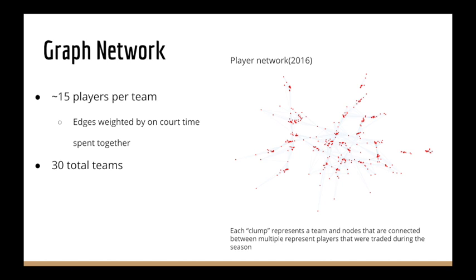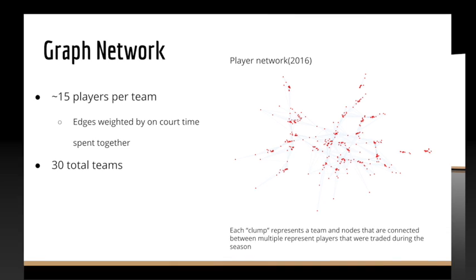Each node will be filled with player stats as individual data points. We will use the team's name as our node. Each node will contain the players of that team, with address between players representing the amount of time they are on the court together. On the right will be the example for a whole player's network in 2016. Each clamp represents a team and nodes that are connected between multiple represent players that were traded during the season.